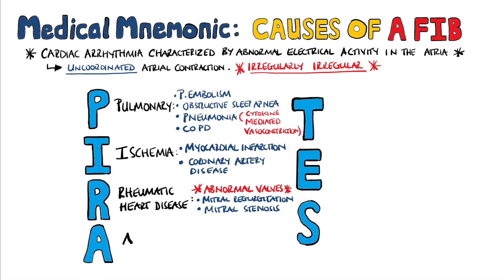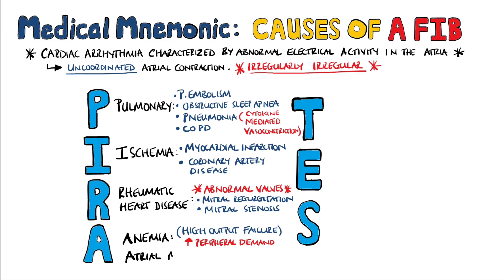A is for anemia, which also reminds you of any high output failure leading to tachycardia. The term high output failure means that the cardiac output is higher than normal due to increased peripheral demand, but it's still not enough to meet that demand. A also stands for atrial myxomas.